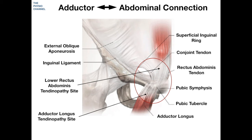The anterior surface of the adductor tendon is flat and tendinous, but on the posterior surface the muscle fibres continue much closer to the bony attachment than on the anterior surface. Like many tendons, the area between the muscle and bone has a lesser blood supply than the osseous attachment or the musculotendinous junction.